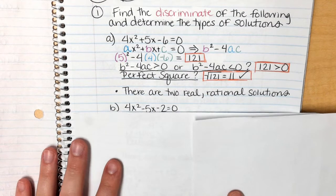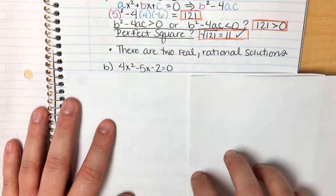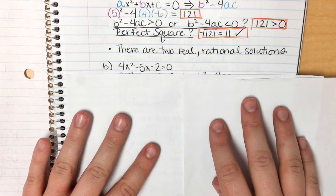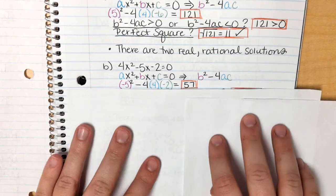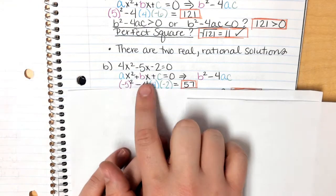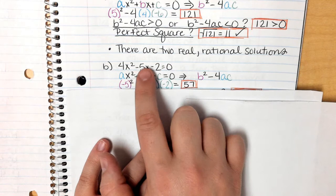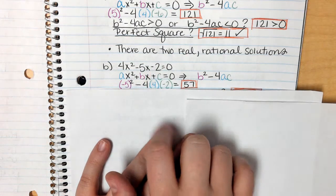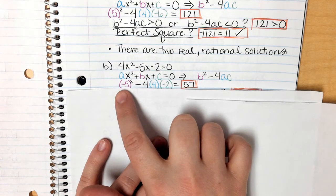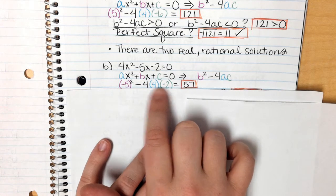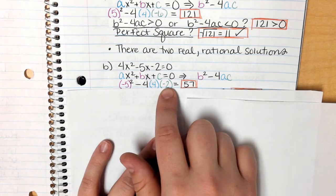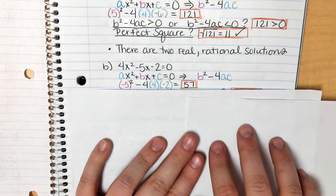Alright, the second one. So we've got 4x squared minus 5x minus 2. So we are going to plug it into the discriminant. So a is 4, b is negative 5 this time, and c is negative 2. So b is going to be negative 5, a is going to be 4, c is going to be negative 2. Again, we're going to type it straight into our calculator and we get 57.